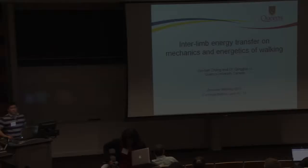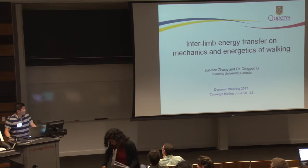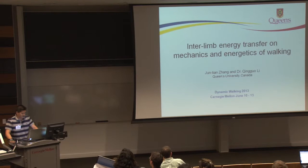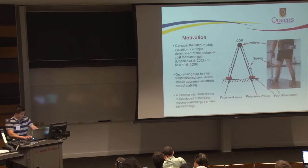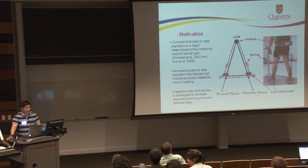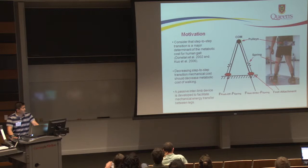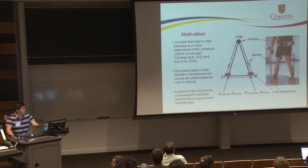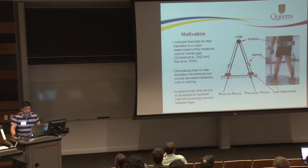My name is Jun-Tien Zhang, and my supervisor is Dr. Ching-Wa Li. We're from Queen's University, Canada — first time being here at Dynamic Walking. The main purpose of this research is to reduce the metabolic cost of human gait, and our approach was by attempting to reduce the mechanical cost of the step-to-step transition period. We focused on this period because it is considered a major determinant of human gait.